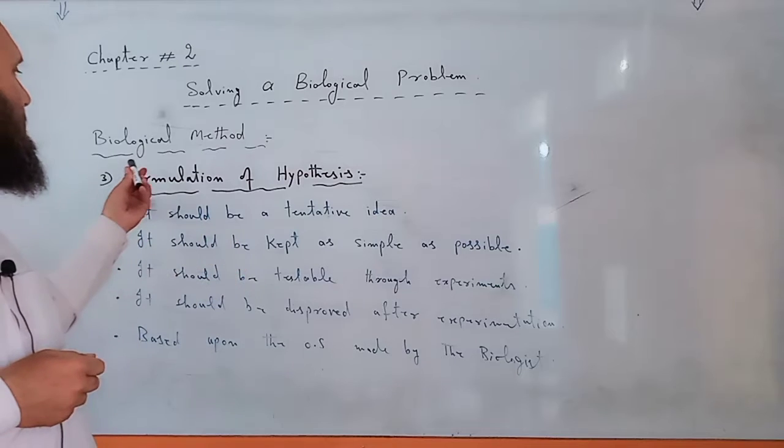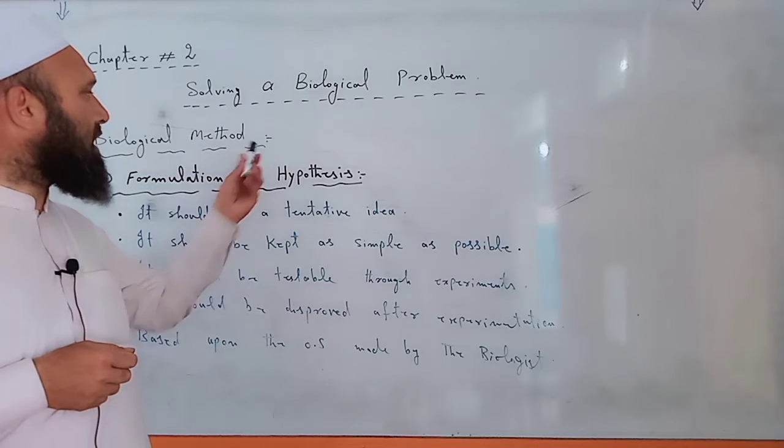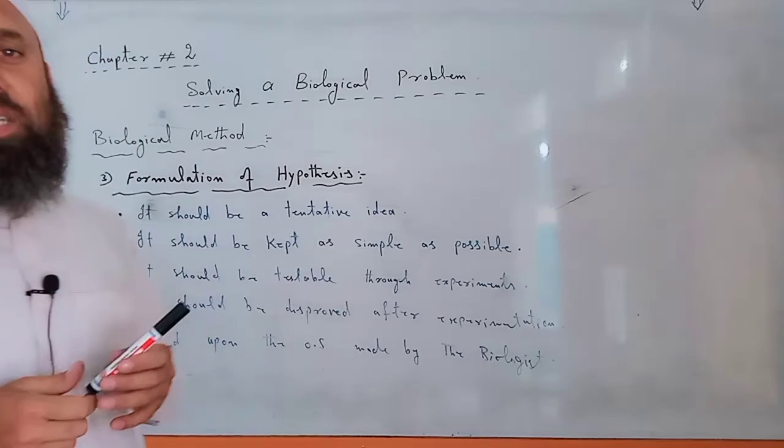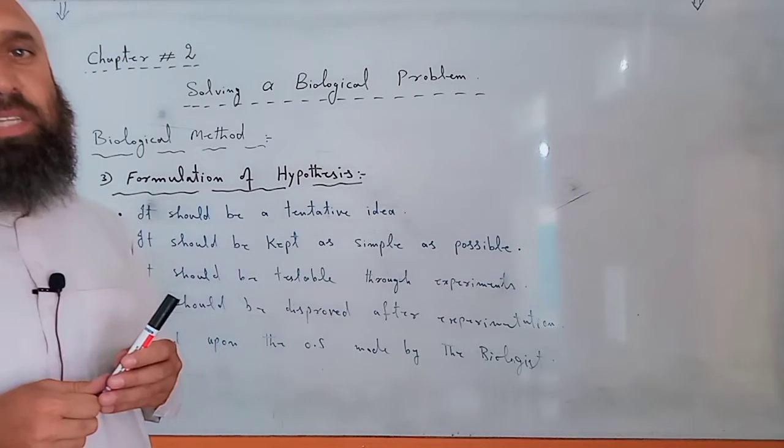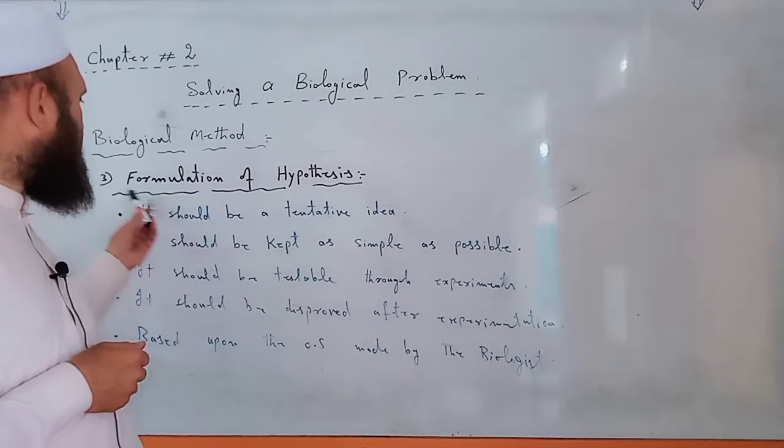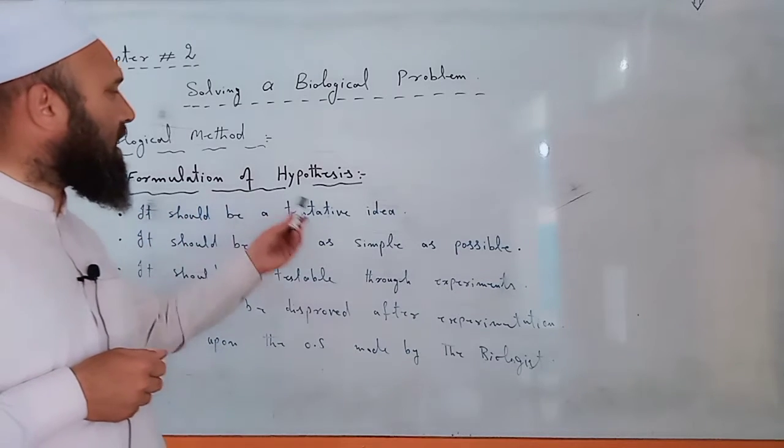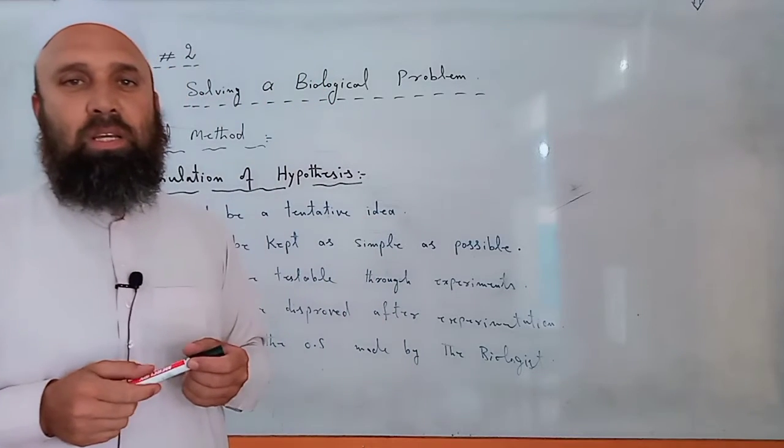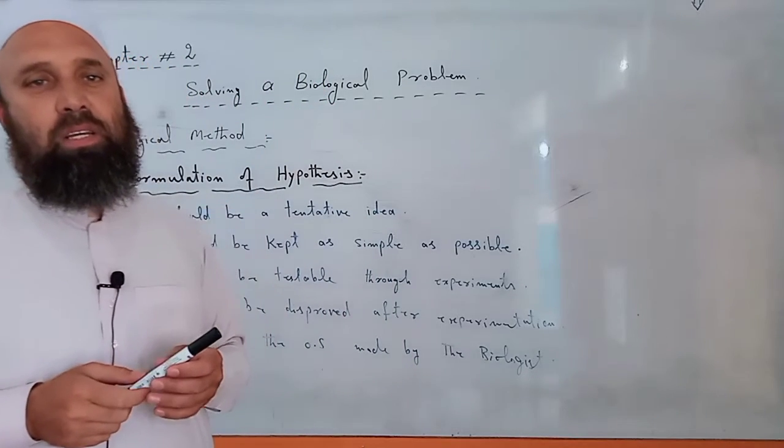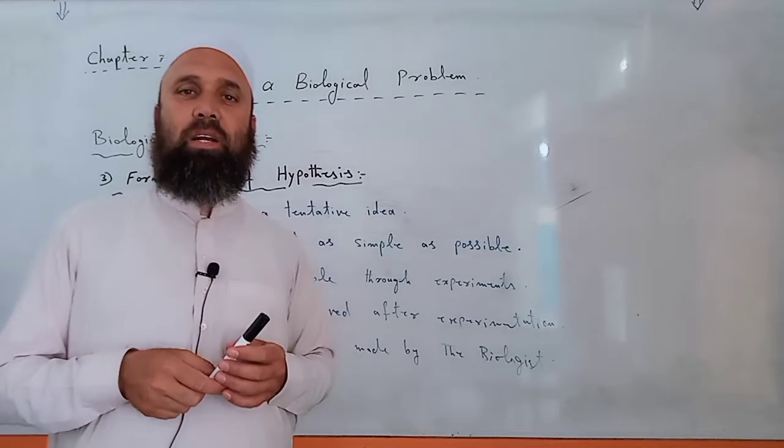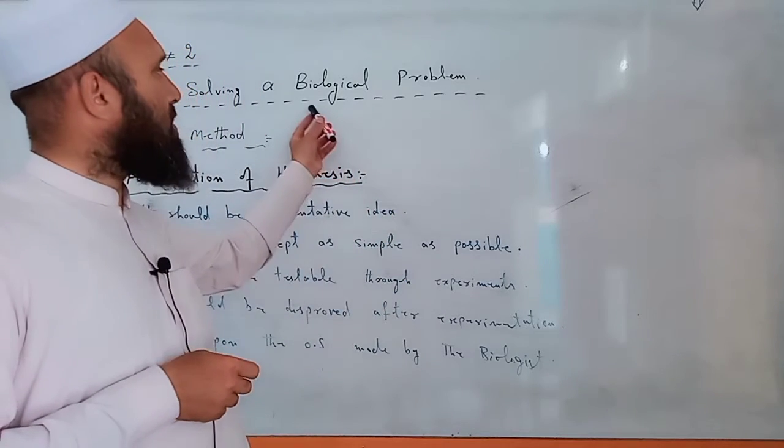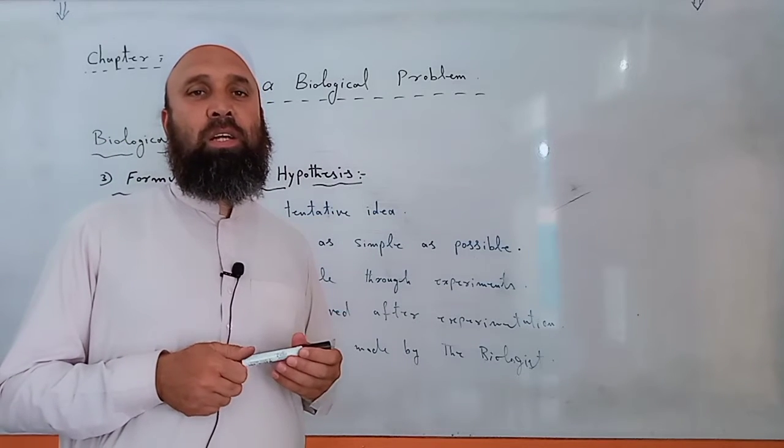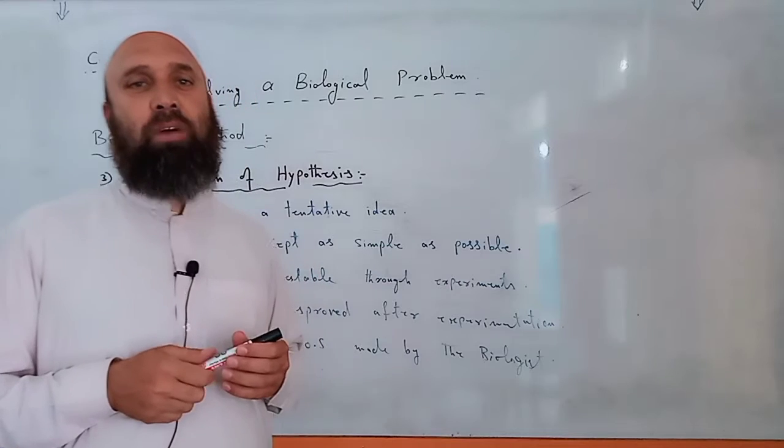The steps of biological method or scientific method. The third step is formulation of hypothesis. So hypothesis: it is a statement given by a scientist or biologist about a biological problem. It should be true or false.